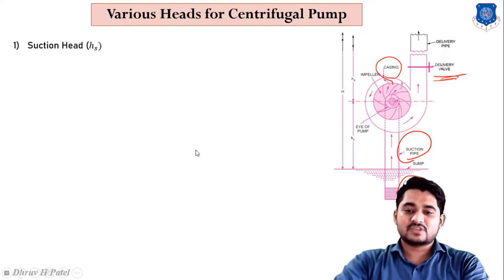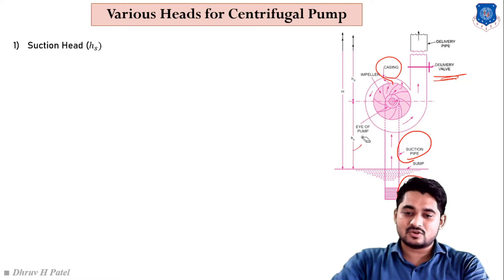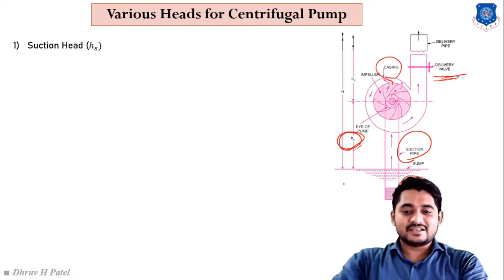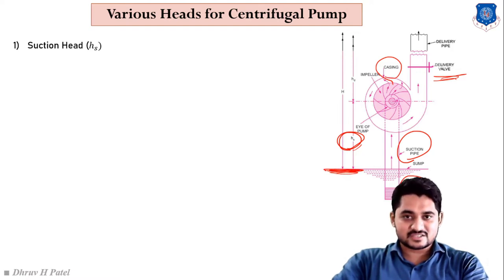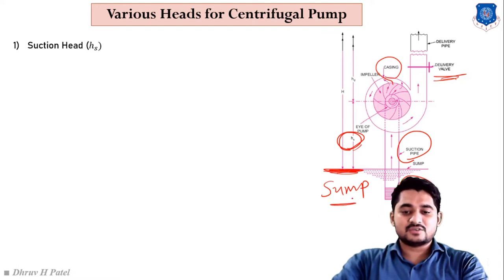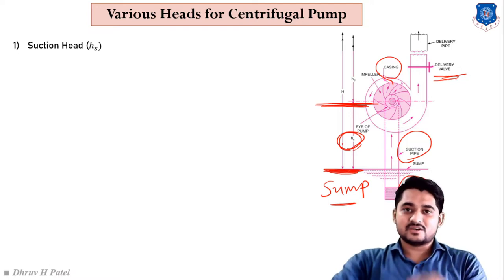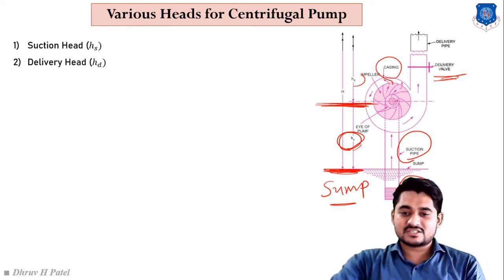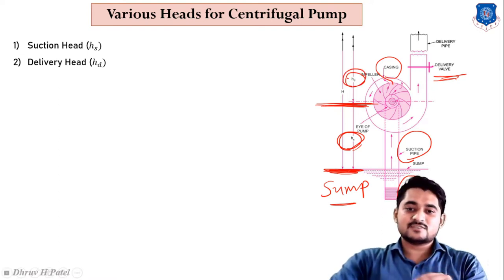The first head is suction head, represented by small h_s. It is the vertical distance between the suction level (sump) and the center of the shaft. The second one is delivery head h_d, which is basically the vertical distance between the center of the shaft and the upper level of the pipe, that is our destination.